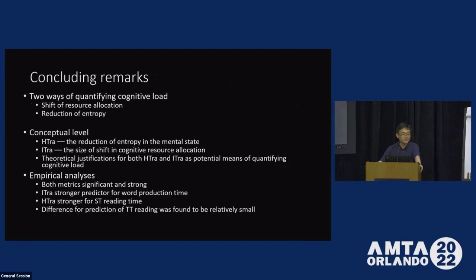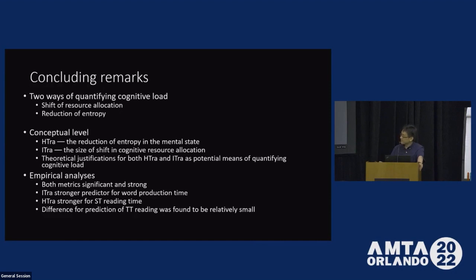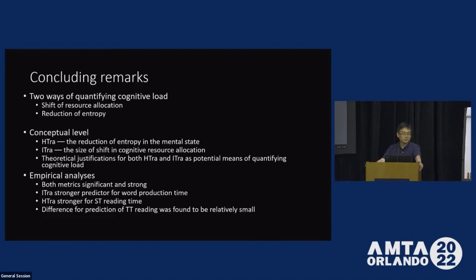In conclusion, we have looked at two ways of quantifying cognitive load: shift of resource allocation and reduction of entropy. At the conceptual level, I have tried to argue that EXTRA approximates the reduction of entropy in the mental state, while ITRA approximates the size of shift in cognitive resource allocation. I have hopefully provided some theoretical justifications for both ITRA and EXTRA as potential means of quantifying cognitive load. But in the empirical analysis, we find that both metrics are significant and strong in terms of predicting effort. ITRA seems to be a stronger predictor for word production time, whereas EXTRA seems to be a stronger predictor for ST reading time. And the difference for prediction of TT reading was found to be relatively small. I hope that this will contribute to the exploration of theoretically justifiable and empirically dependable means of predicting effort and quantifying cognitive load. Thank you.